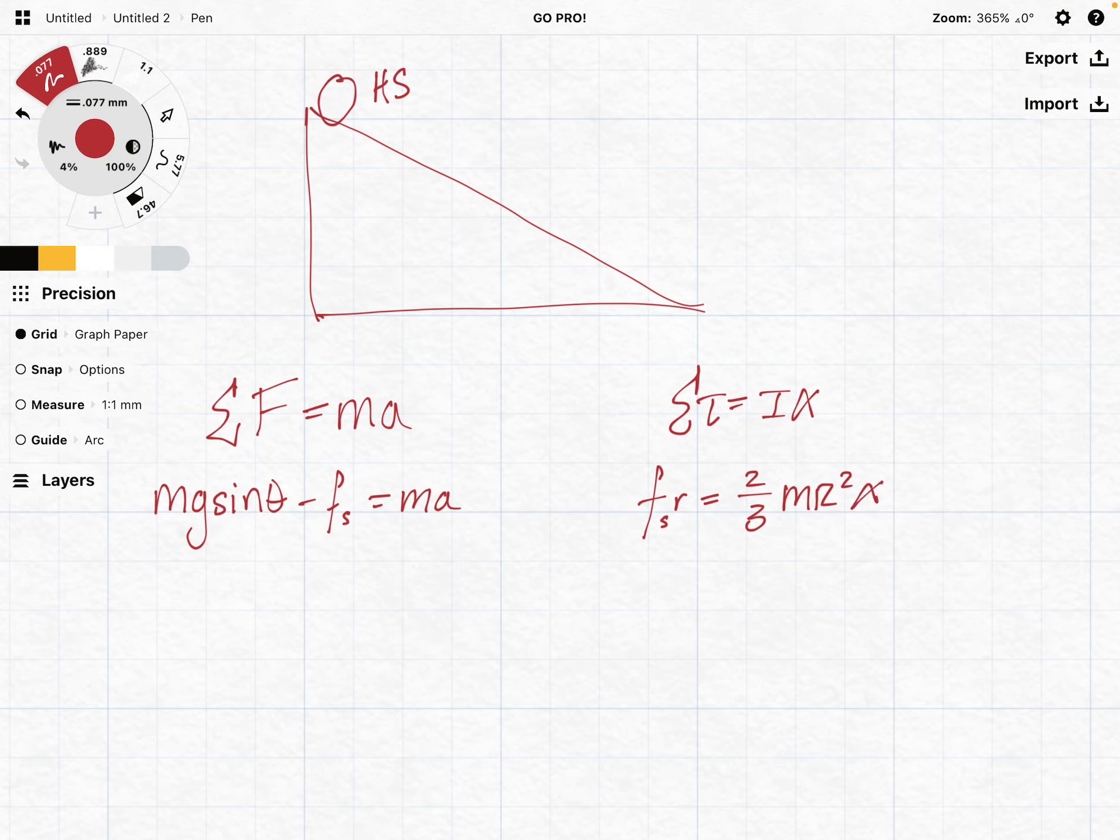Now I have this set up. What I'm going to do first is start on my linear or translational side: mg sine theta minus mu mg cosine theta equals ma. Now I can go ahead and get rid of my mass, so now I have g sine theta minus mu g cosine theta equals a.